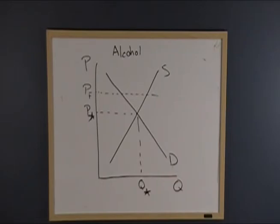If a price floor exists above equilibrium price, that means the price can't move down far enough to get to equilibrium. And if that's the case, we are going to have a greater quantity of alcohol being supplied than is being demanded at that price.